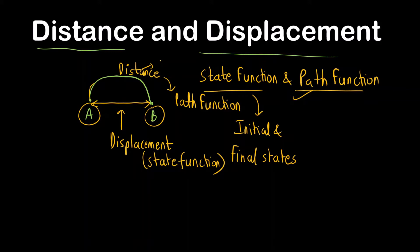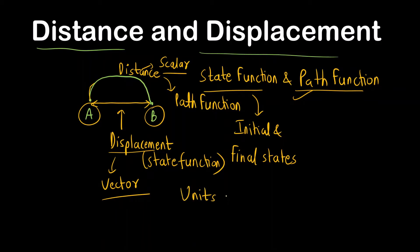Distance is a scalar quantity — it does not depend on direction. Displacement is a vector quantity — it depends on direction. The unit of both distance and displacement is any unit of length: it can be meter, kilometer, centimeter, or any unit of length.